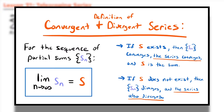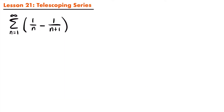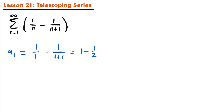So if we go back to our series and want to find the nth partial sum, we first need to write out a couple of the terms of this series. Starting with a sub 1, where n equals 1, we'll have 1 divided by 1 minus 1 divided by 1 plus 1, which will be equal to 1 minus 1 half, since 1 divided by 1 is 1 and 1 divided by 1 plus 1 is 1 half.